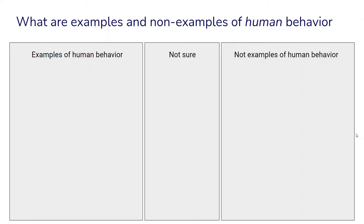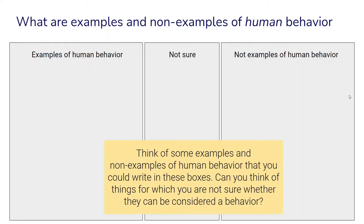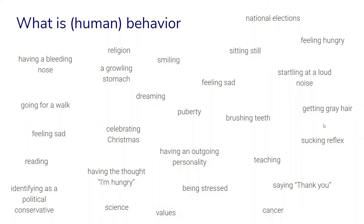In the module we have an activity where we can first think about what we consider some examples of behavior, things that are not examples of behavior, and maybe also things where we are not so sure whether we can consider them an example of behavior or not. Here is a collection of different kinds of examples which we can use to sort into these three areas — things like going for a walk, which most of us would agree is a behavior, but maybe things like dreaming, puberty, being stressed, or cancer.